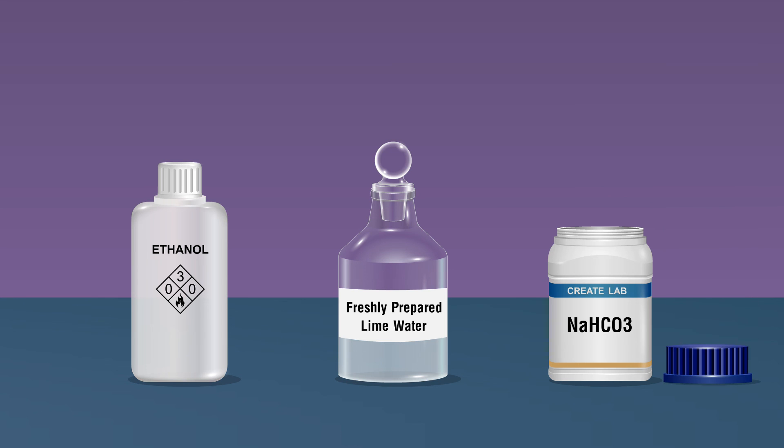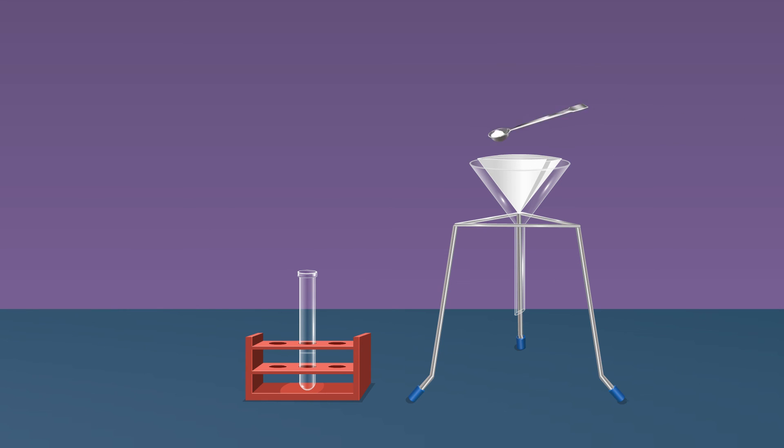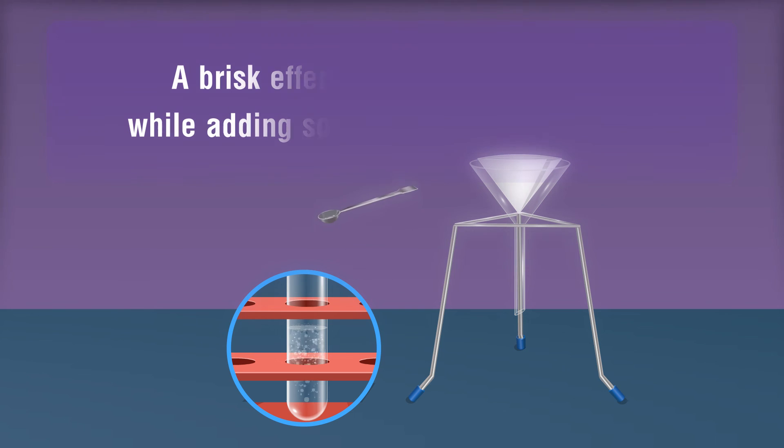Then add a pinch of sodium hydrogen carbonate NaHCO3 using a spatula into the boiling tube containing the filtrate. A brisk effervescence is produced while adding sodium hydrogen carbonate.